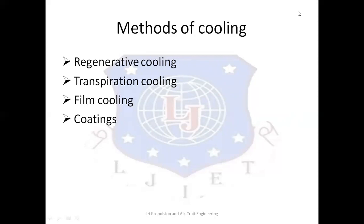Film cooling is an effective cooling system in both liquid and solid propellant rocket engines. The last method is coatings, where a layer of low-conductivity material is deposited as a thermal barrier on the inner gas-side of the wall to prevent heat transfer. These are the various methods used for cooling in rocket engines.